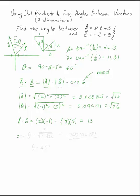So we can solve for cosine of theta is 13 over the square root of 13 times the square root of 26, which is .707106781.